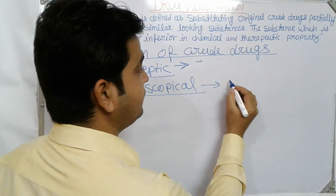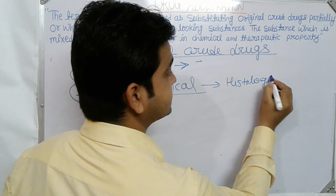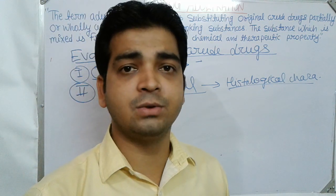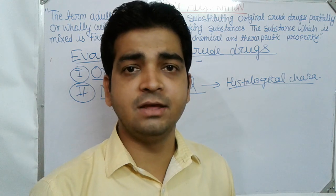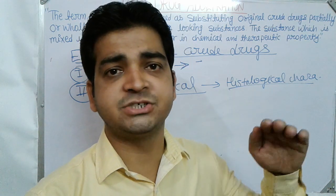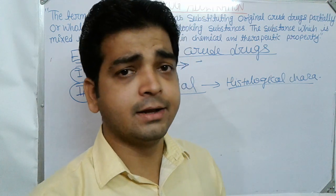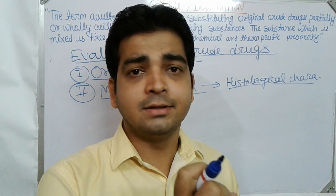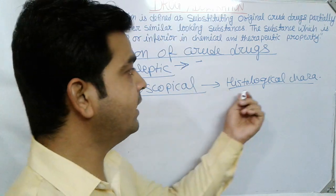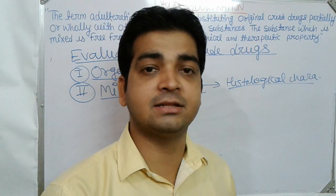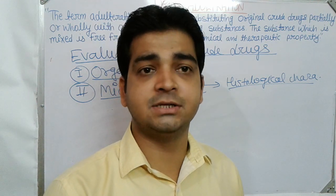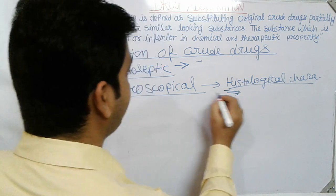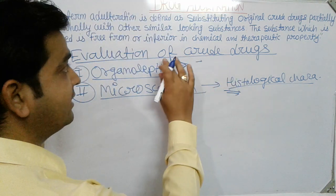In microscopical evaluation we also study powder characteristics — whether calcium oxalate crystals are present or absent, parenchyma cells, vessels, length and width of vessels, and fibers. This helps us find out whether a particular crude drug has been adulterated or not. The third evaluation method is chemical evaluation. In chemical evaluation, we perform identification tests. All crude drugs have their own chemical constituents.